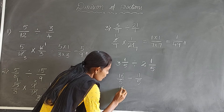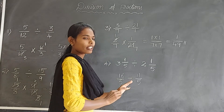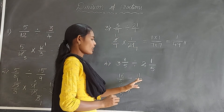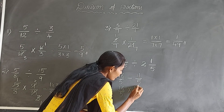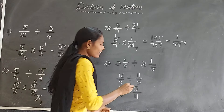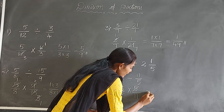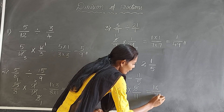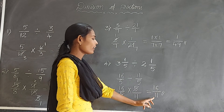Write the fraction 16 by 5. Instead of the division symbol, write the multiplication symbol, and the reciprocal of 11 by 5 is 5 by 11. Now 5 and 5 get cancelled. The answer is 16 by 11.